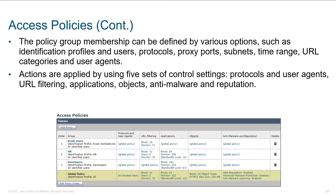The policy group membership can be defined by various options: an identification profile, users, protocols, proxy ports, subnets, and time range. Maybe you're not allowed to buy and trade stocks from 9 to 5 while the market's open, but after 5 PM maybe you don't care what users do after hours — it's just within the time range that you want certain rules to take effect. We can also make restrictions based on user agents, which is handy for kiosks or IoT devices throughout the organization.